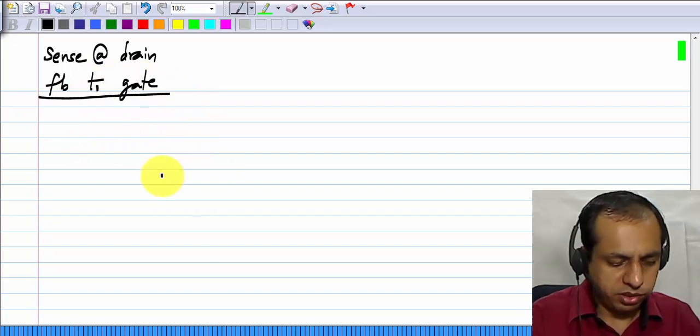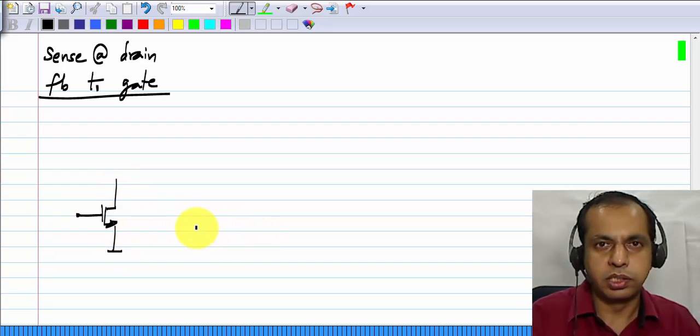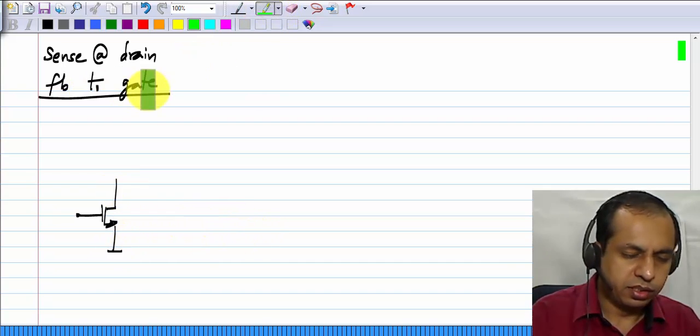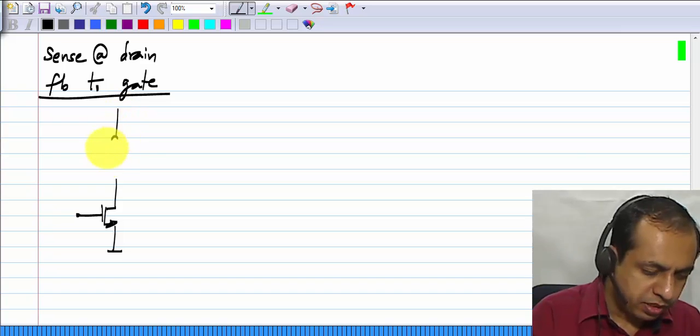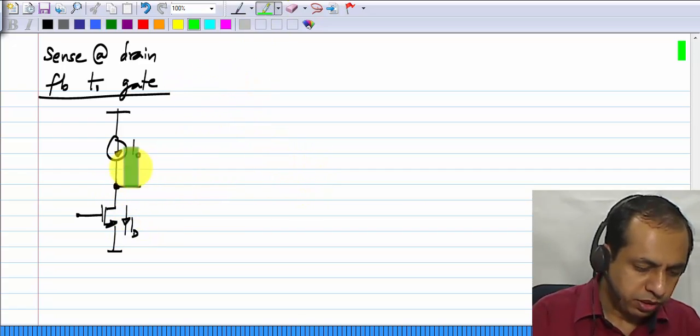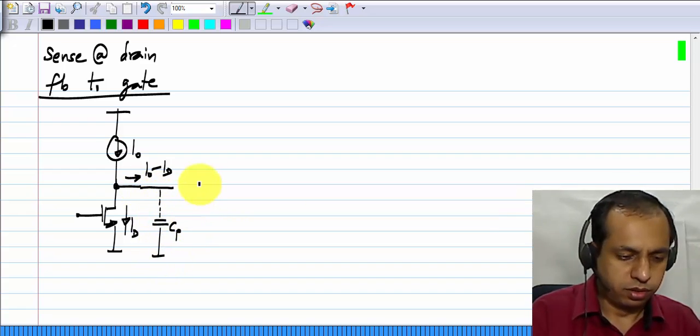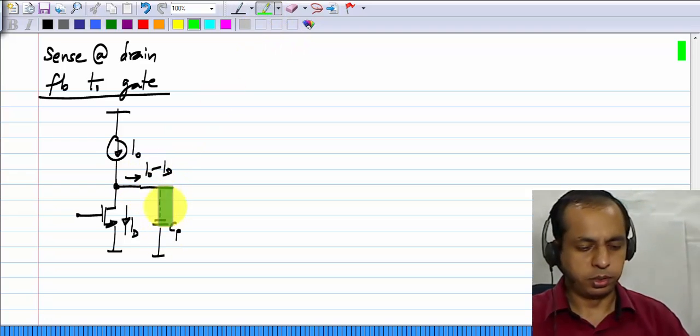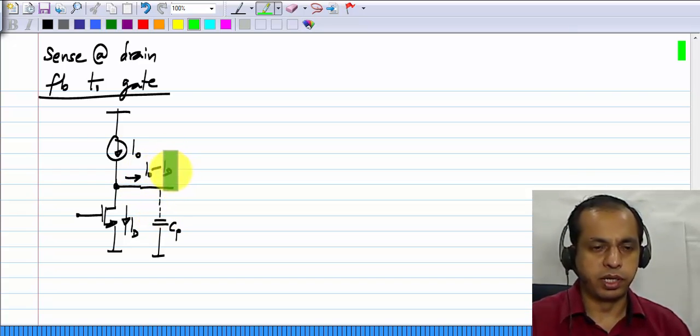When we sense at the drain and feed back to the gate, we have a MOS transistor with the source connected to ground, connected to a fixed voltage. When we say feedback to the gate, the idea is that source ID is fixed and gate is variable, it is based on feedback. By connecting a current source I naught to the drain of the transistor, we have a situation where the difference I naught minus ID tends to flow that way. We can imagine that there is a parasitic capacitor into which this current is flowing. That is a good way of visualizing things, it tells you exactly what happens when I naught is more than ID or less than ID.